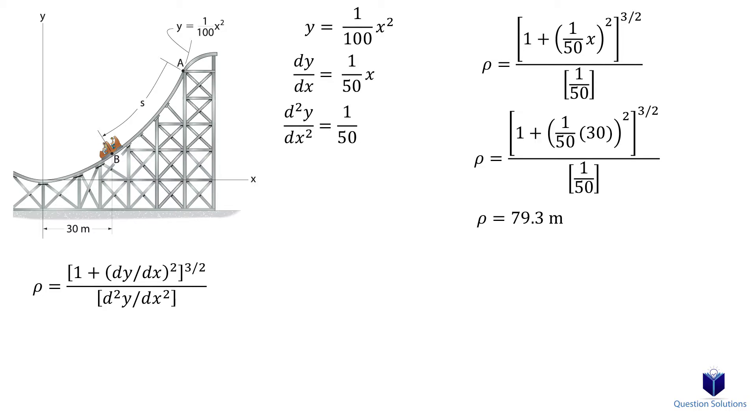Now to find the normal acceleration, we can use this equation. Velocity is given, which is 25 meters per second, and we just found rho. So let's plug it in and solve, which gives us 7.88 meters per second squared.